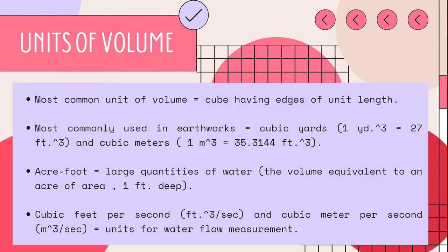Here are the units. The most common unit of volume is a cube having edges of unit length. Cubic feet, cubic yards, and cubic meters are used in surveying calculations, with cubic yards and cubic meters being most common for earthworks. Note: one cubic yard equals 27 cubic feet and one cubic meter equals 35.3144 cubic feet.